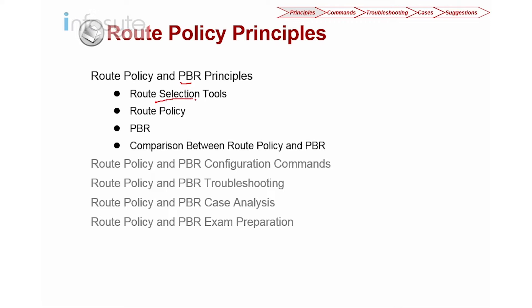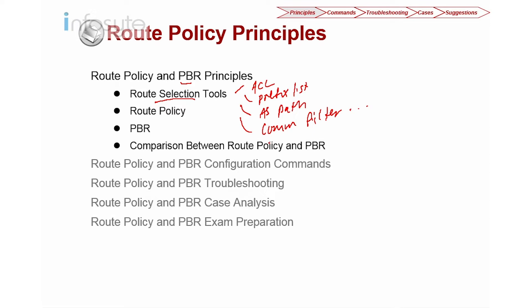Now first we are going to discuss the Route Selection Tools. We have a few tools: namely we have the ACL, we have the prefix list, and if you still remember from BGP, we have the AS path and the community filter, among others. So we will look into Route Policy and how Route Policy behaves.